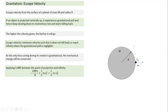We apply conservation between two points: one is the point of projection, and the final point is when it reaches r equal to infinity. Initial total energy is gravitational potential energy on the surface of the planet times mass, plus one-half m times v-squared. At infinity, the potential energy becomes zero because r in the denominator becomes infinity. For minimum escape velocity, we set the velocity at infinity to zero, giving us v_escape equals √(2GM/R).